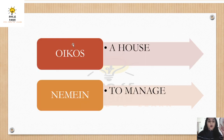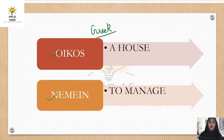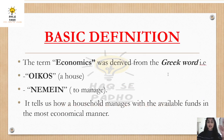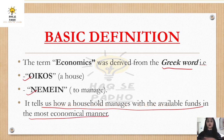Now let's see that the word economics is derived from the Greek word. Which are the two words? The first is oikos, and the second one is nimmin. Oikos means house, and nimmin means to manage. Economics tells us how a household manages with the available funds in the most economical manner — in which way a household runs its own home with limited resources to satisfy their unlimited wants. What do we call that? Economics.